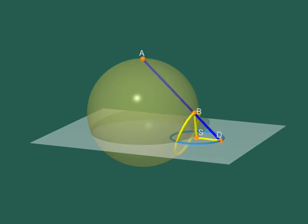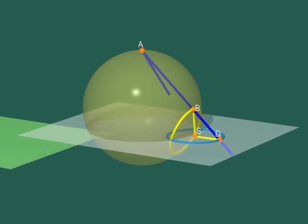We have seen that, by Thales' theorem, this implies that the projection onto the tangent plane to the south pole is also contained in a circle.